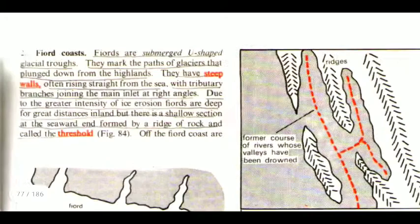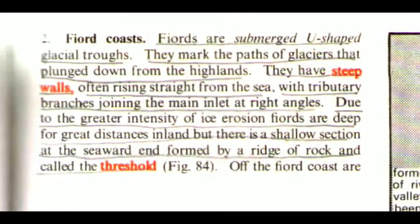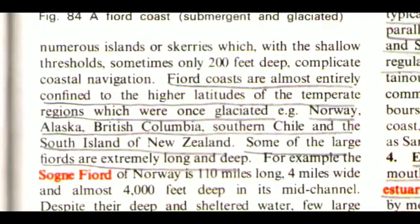The second one is Fjord Coast. Fjords are submerged U-shaped glacial troughs. They mark the paths of glaciers that plunged down from the highlands. They have steep walls, often rising straight from the sea, with tributary branches joining the main inlet at right angles. Due to the greater intensity of ice erosion, fjords are deep for great distances inland, but there is a shallow section at the seaward end, formed by a ridge of rock called the threshold of the fjord. Numerous islands or skerries, which with the shallow thresholds — sometimes only 200 feet deep — complicate coastal navigation. Fjord coasts are almost entirely confined to the higher latitudes of the temperate regions which were once glaciated: Norway, Alaska, British Columbia, southern Chile and the South Island of New Zealand. Some of the large fjords are extremely long and deep — for example, the Sogne Fjord of Norway is 110 miles long, 4 miles wide and almost 4,000 feet deep in its mid-channel.